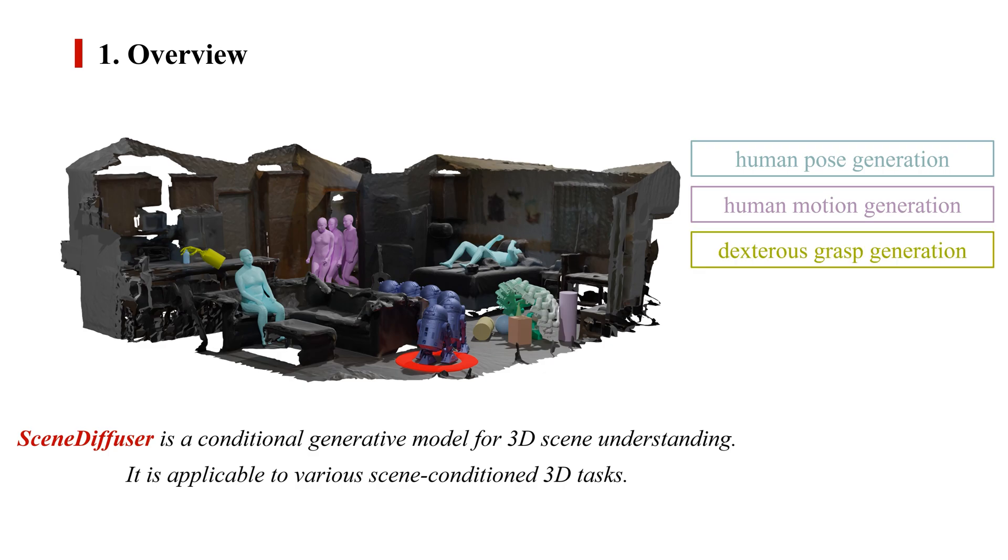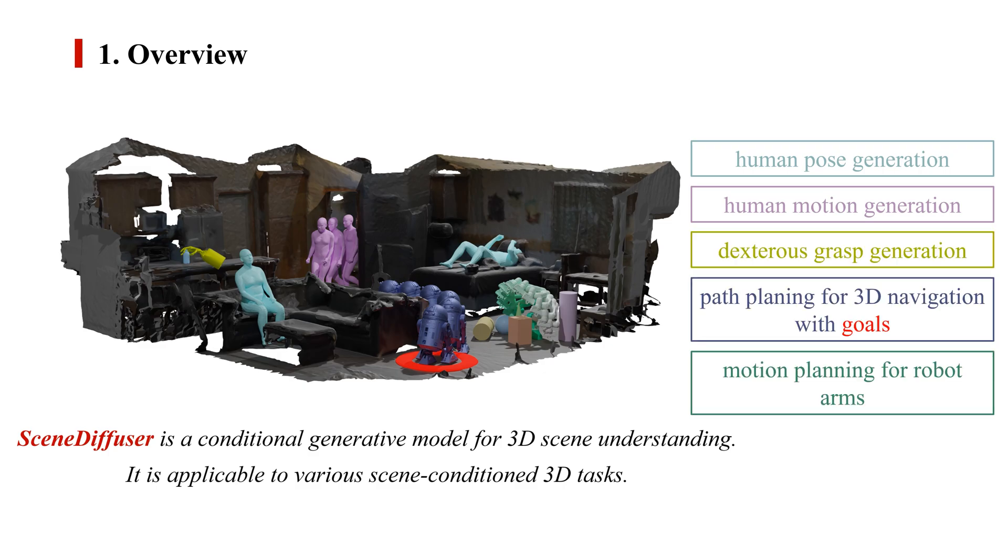including human pose and motion generation, dexterous grasp generation, path planning for 3D navigation, and motion planning for robot arms.